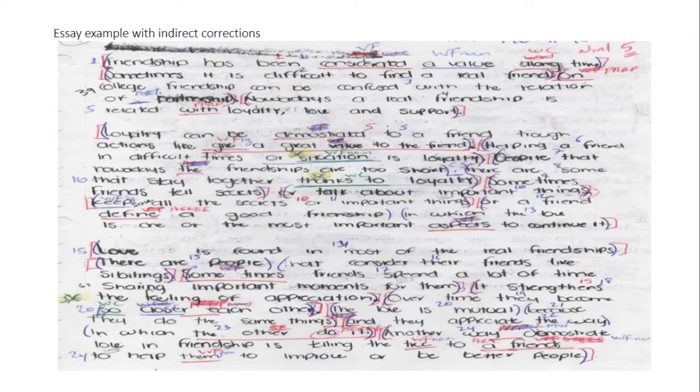Here we have an example of an essay that one of the participants wrote — a scanned copy, not fully visible. In the following slide you can see what we did with the 31 essays: we numbered the lines to make it easier to identify types of errors and agree on classification — whether morphological, syntactical, or lexical. Then we did the accuracy analysis, followed by the complexity and fluency analysis.